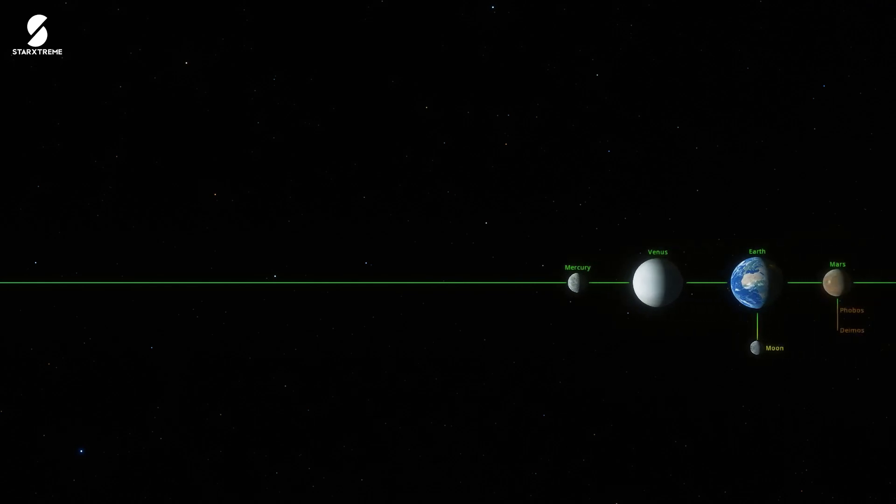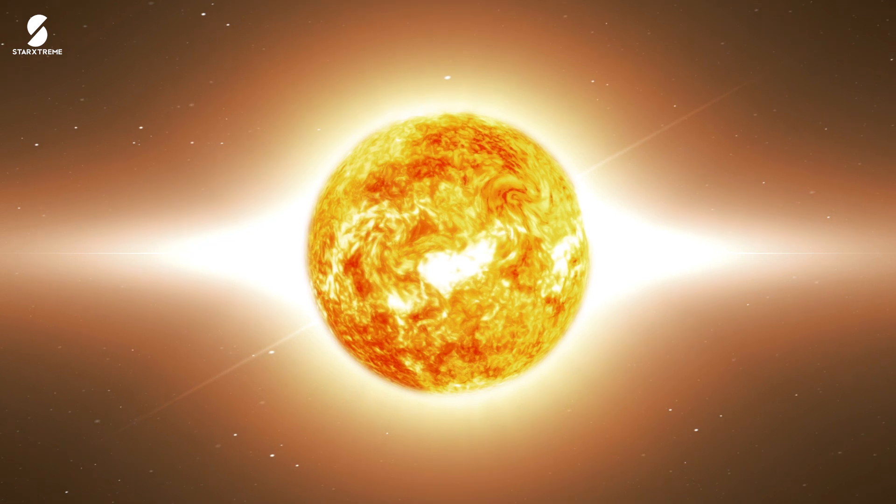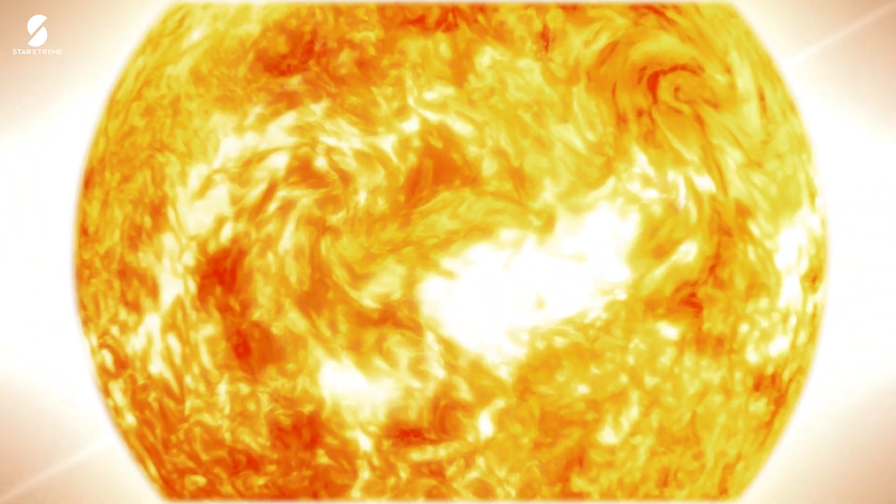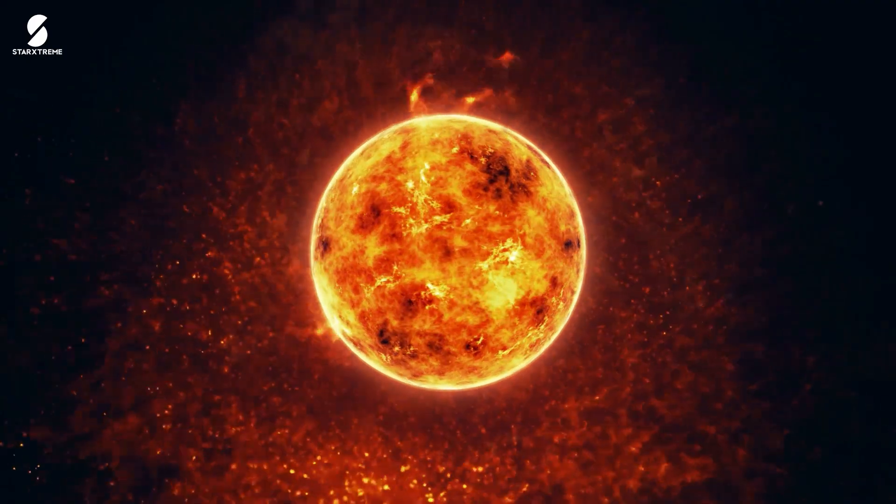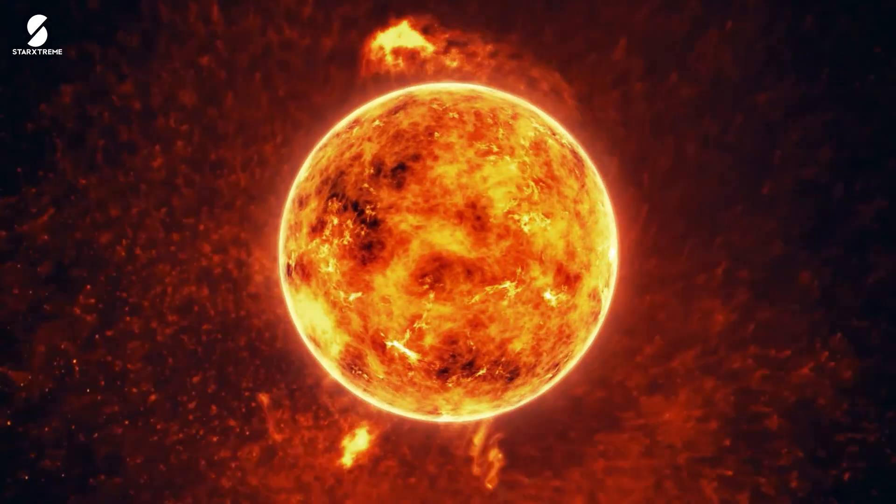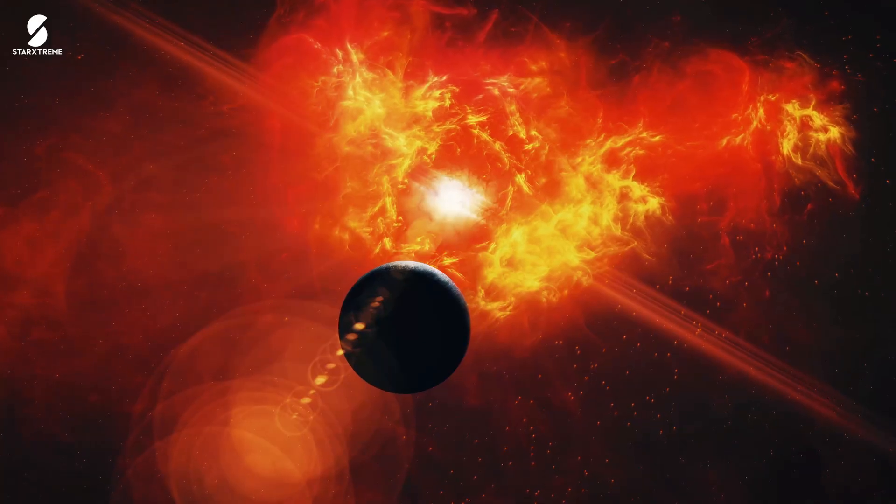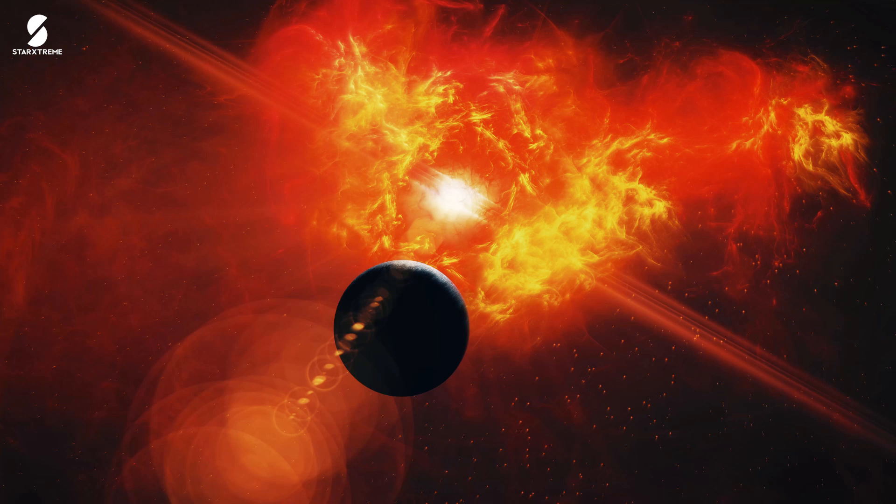But that is not going to be the case forever. The Sun is getting angrier with every passing century, and after around 5 billion years it will enter its red giant phase, when it will start expanding until it becomes a red giant. At this point, the Sun will be around 200 times bigger and 2,000 times brighter than it is right now.